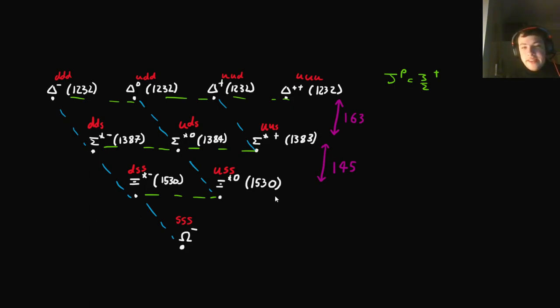So, if you take that, then you expect a gap of, if we average it at about 154 MeV down to here, which would give an omega mass of 1684 MeV. And so, that's what Murray Gell-Mann said in 1961.